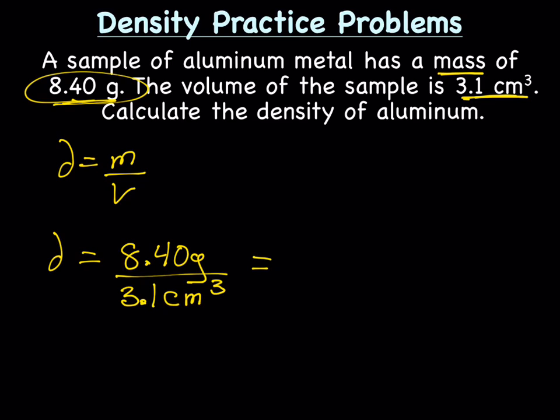Now we'll just divide, and that'll give us 2.709677419. We now have the units grams per centimeters cubed.